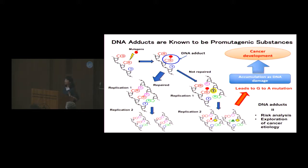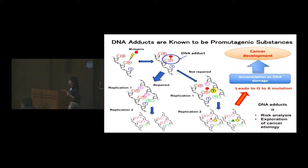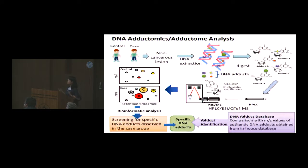It is well known that environmental factors are deeply involved in human cancer development. Mutagens and many chemical compounds existing in our environment, once absorbed in our body, bond to DNA nuclear bases to form DNA adducts. Most DNA adducts can be repaired back to normal bases; however, those that remain can induce mutations in the genome. That is why DNA adducts are considered to be pro-mutagenic substances and have been used as biomarkers for cancer risk analysis and exploration of cancer etiology.